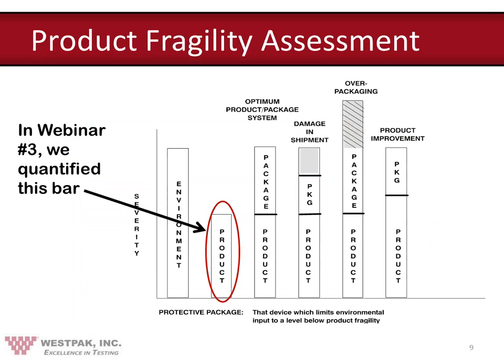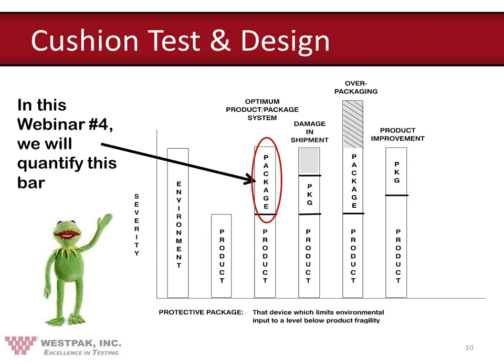This bar chart was the brainchild of Mr. Bill Kipp, who I consider one of the geniuses in the business. With this chart you can quantify the elements necessary to design a protective package system. You quantify the environment — that was webinar two — the product sensitivities — webinar three — and now in webinar four we're going to quantify the package system itself. We'll talk about the other three bars in the next webinar when we cover optimum package design.